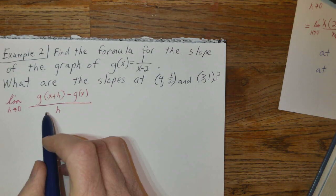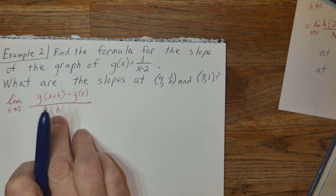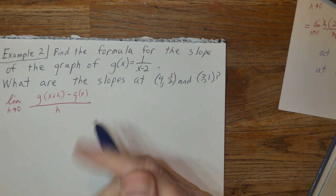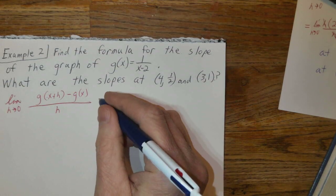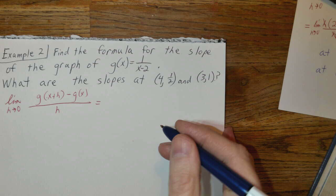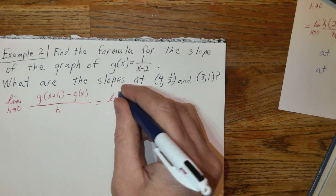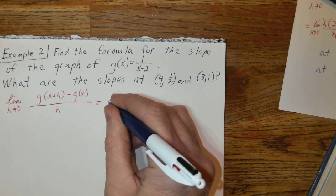y2 minus y1 over x2 minus x1 would always be h in the way we have these set up. And g(x+h), let me write limit as h approaches 0.